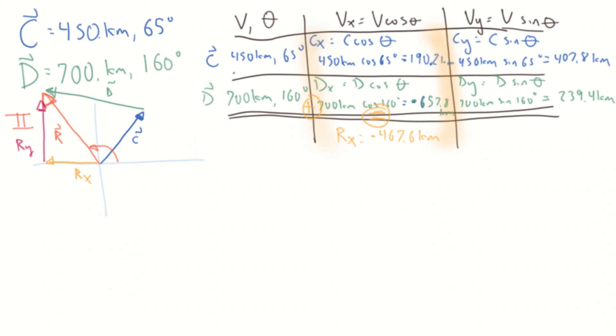Next up, we're interested in solving for the ry. The ry is the sum of the y vectors, so we're interested in these guys being added together. The double line indicates, in my mind, an equal sign, and we can imagine a plus where we add them together. So we have 407.8 plus 239.4, and we get for ry, 647.2 kilometers.